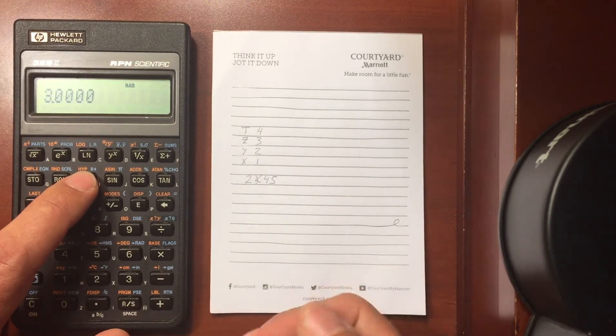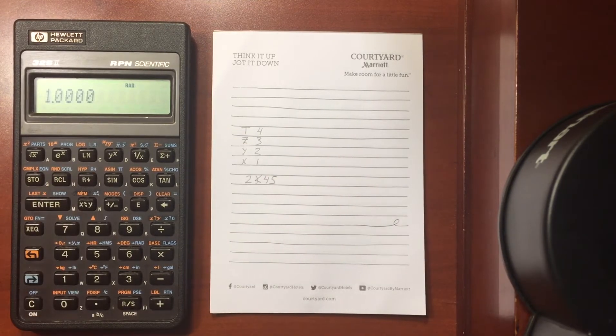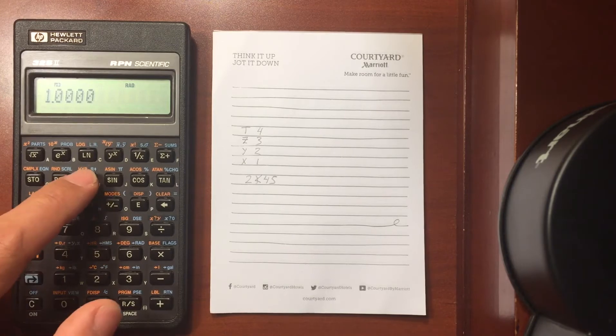And I can continue rolling those around, and they just replace one another scrolling in a loop. You can go the other way by doing R up.